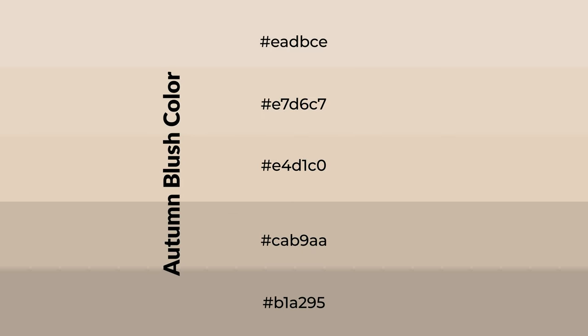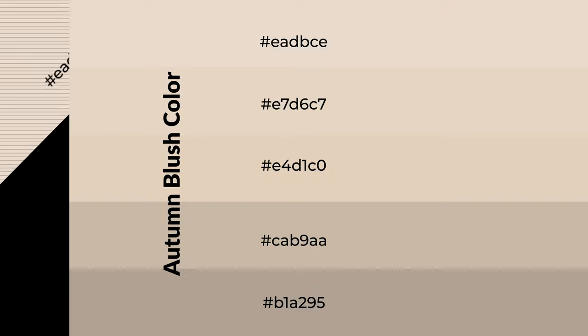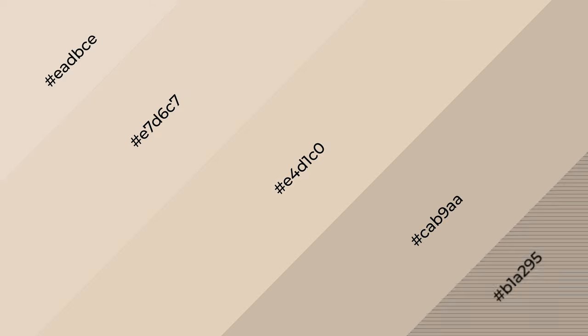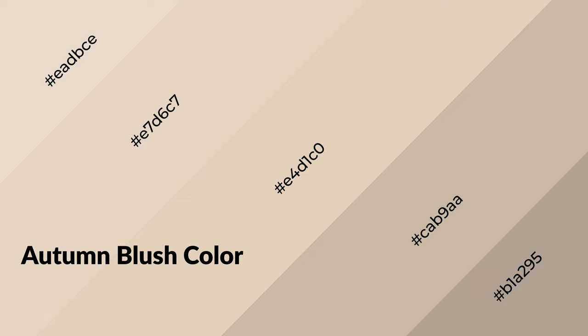To generate shades of a color, we add black to the color, and it is used in patterns, 3D effects, and layers. Shades create depth and drama. Autumn blush is a warm color and it emits cozier and active emotions.